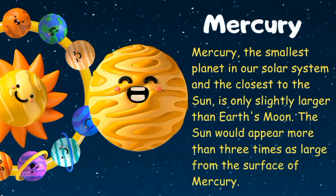First planet: Mercury. Mercury is the smallest planet in our solar system and the closest to the sun. It is only slightly larger than Earth's moon. The sun would appear more than three times as large from the surface of Mercury.